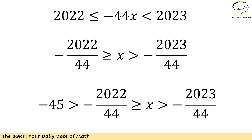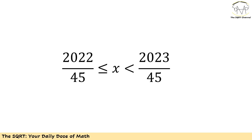However, at the beginning we said x needs to be less than -44 and greater than -45. The range we just found doesn't satisfy that condition, so the negative case is not valid. Therefore, we only have the positive range as our solution, and that concludes our solution.